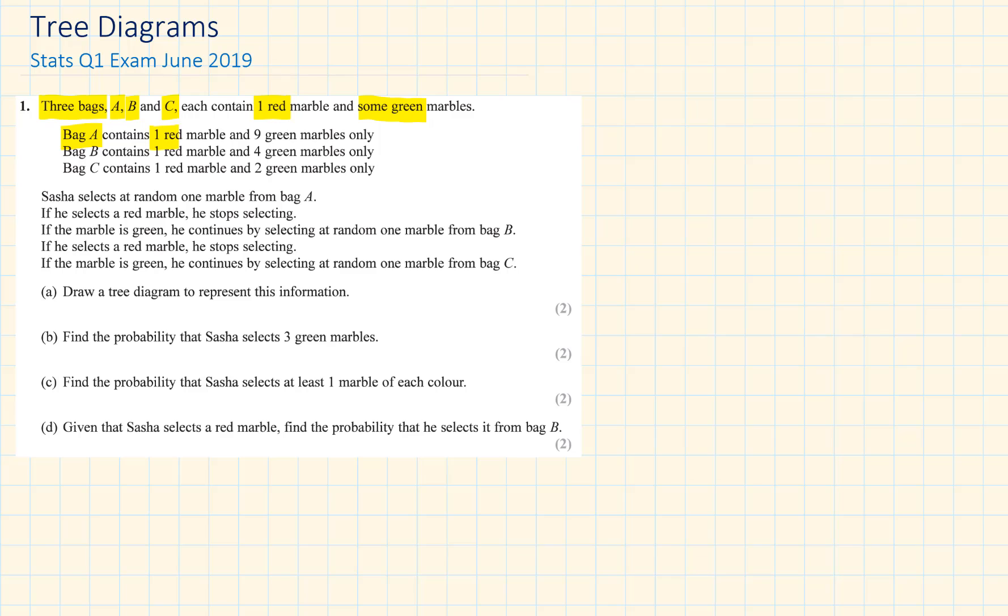Bag A contains one red marble and nine green marbles only. Bag B contains one red and four green marbles. Bag C contains one red and two green marbles. Sasha selects at random one marble from bag A. If he selects a red marble he stops selecting. If the marble is green he continues by selecting at random one marble from bag B. If he selects a red marble he stops selecting. If the marble is green he continues by selecting at random one marble from bag C.